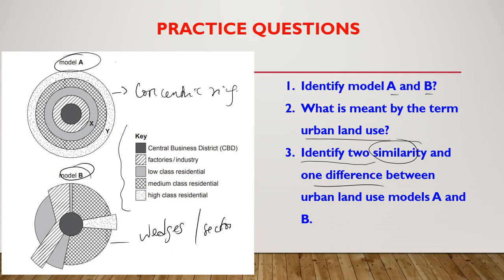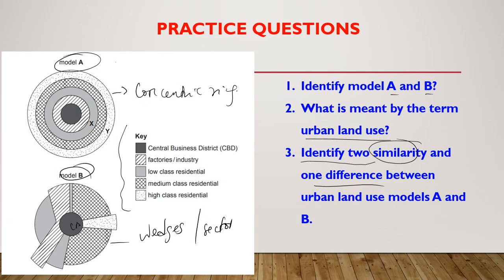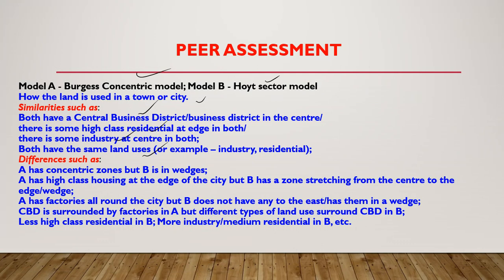Similarities: both models are built from the center, so both have a CBD. Both have low class residential, and both have high class residential — so the land use categories for both are the same. Further similarities: both have a central business district, high class residential at the edge of both, some industry at the center of both. Differences: A has concentric zones and B is in wedges. A has high class residential at the edge. You can read through these points — it's quite straightforward once you understand what they are looking for.